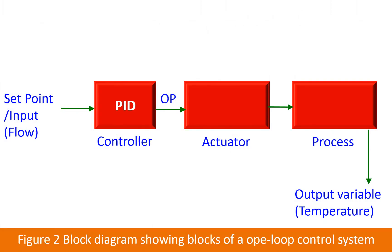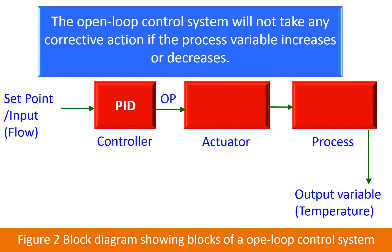This figure illustrates the block diagram showing the blocks of an open loop control system. The controller is provided with a set point. Based on the difference between the set point and the actual value, the controller sends a signal to the actuator, which is the final control element, which acts to regulate the manipulated variable to the process. The open loop control system will not take any corrective action if the process variable increases or decreases.